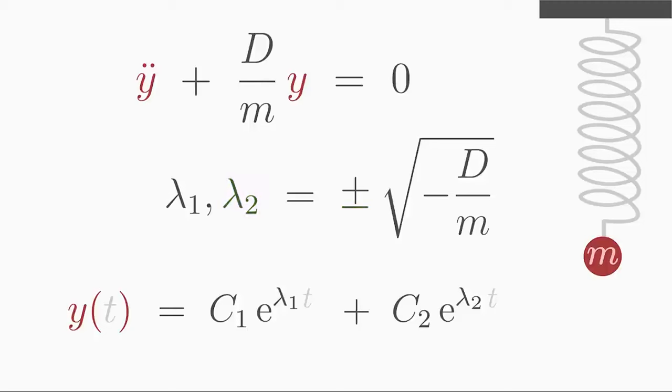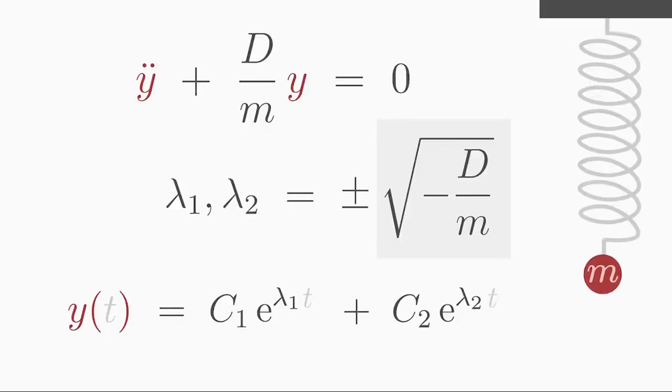Also, we have an interesting case here when the square root of a negative number is taken. Square root of a negative number is not a real number, but an imaginary number. Do you remember what that means? We expect that the system must oscillate.